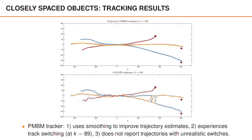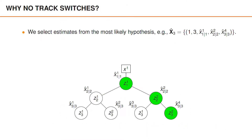Apart from the fact that PMBM filters handle data association hypotheses in a nice manner, the PMBM tracker actually offers at least two separate improvements compared to the delta GLMB algorithm. First, in the version illustrated above, we perform smoothing on the state estimates, which gives rise to smooth trajectory estimates. Second, even though both methods experience track switches, the PMBM tracker reports realistic trajectories also after the switch.